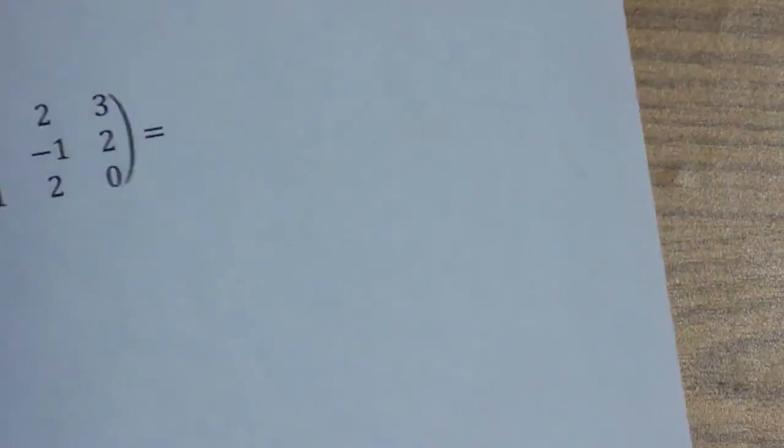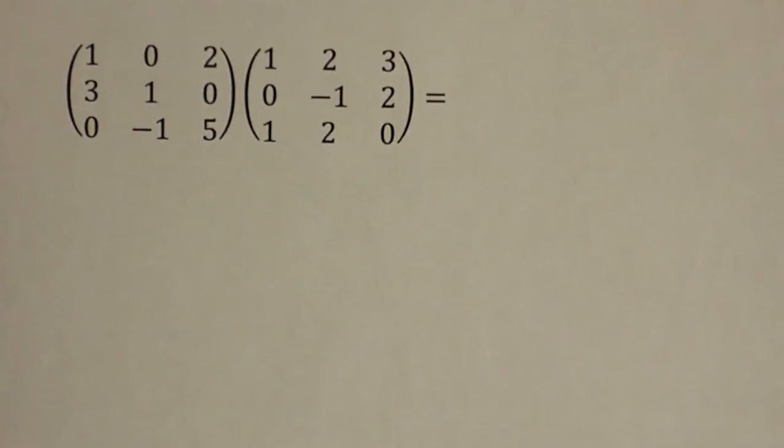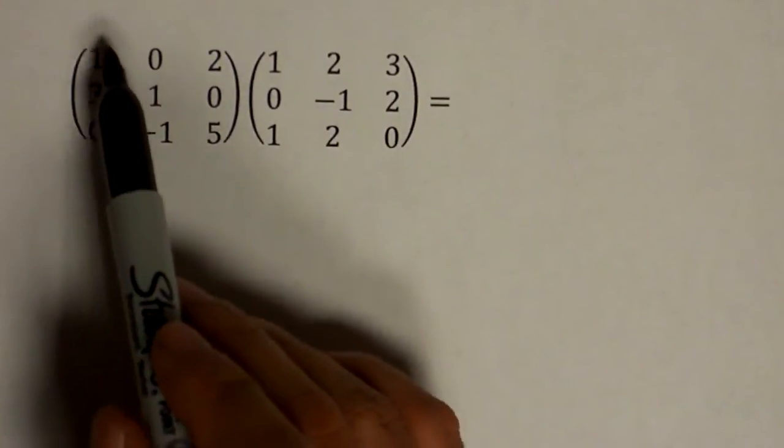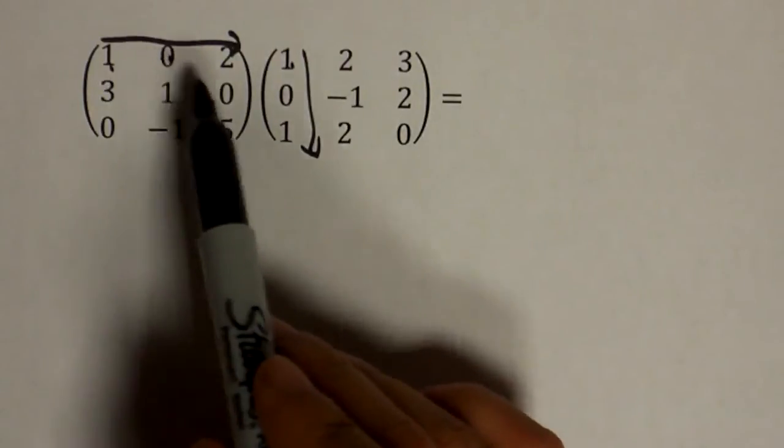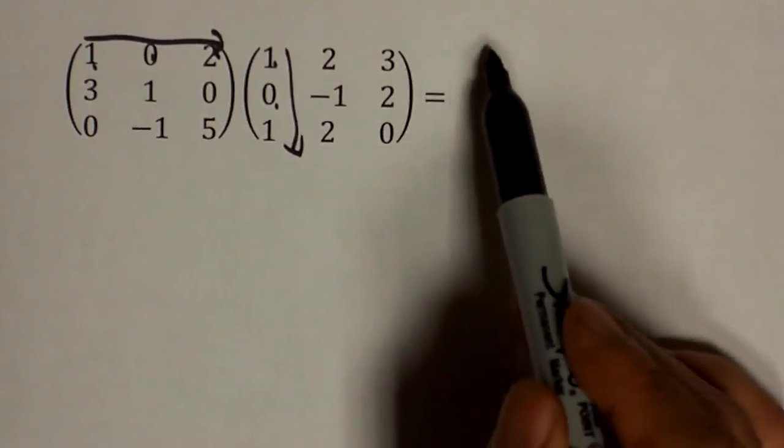Let me end this presentation by showing you how to do products of a three by three matrix. And it's basically done the same way. Across, down, so 1 times 1, 0 times 0, 2 times 1, that's 3.